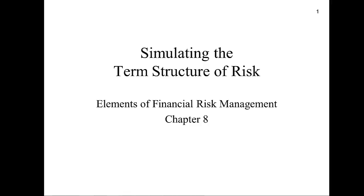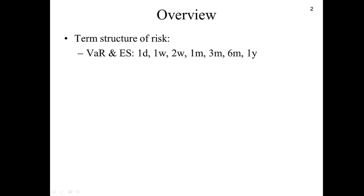This is the video of chapter 8 on how to construct the term structure of risk, from the book Elements of Financial Risk Management by Peter Christoffersen. In this chapter we will see how to construct the term structure of risk, in particular how Value at Risk and Expected Shortfall are constructed for different horizons such as one day, one week, two weeks, and up to a year.